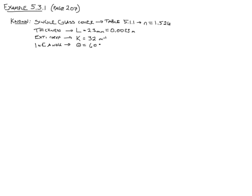We are asked to find transmissivity tau, reflectivity rho, and absorptivity alpha. I've also added that I want to check that tau plus rho plus alpha equals 1, because it should be.